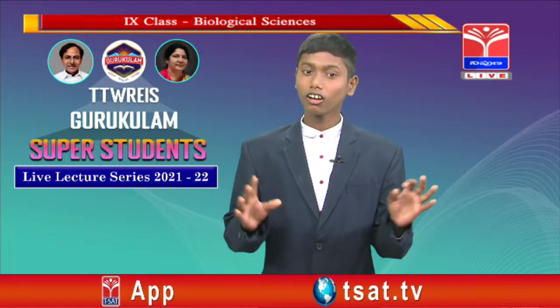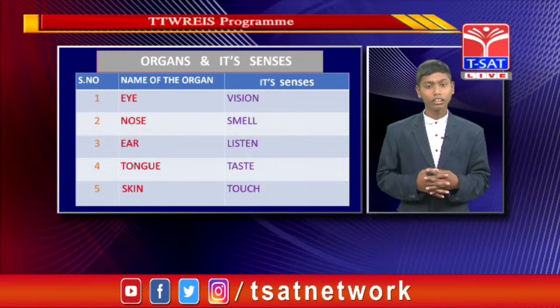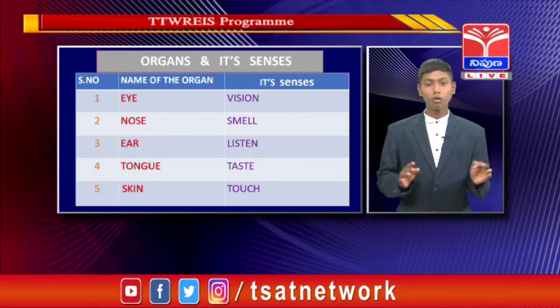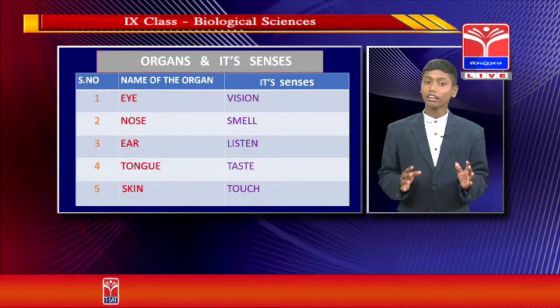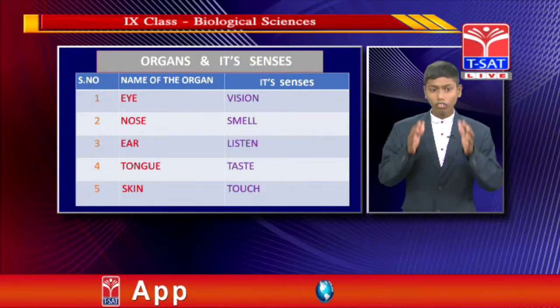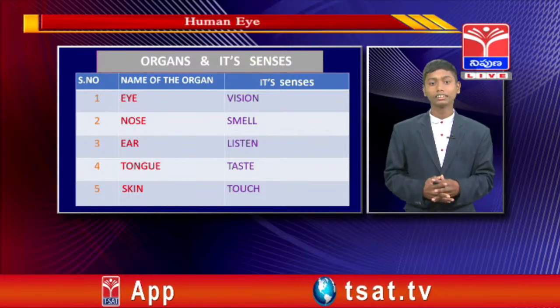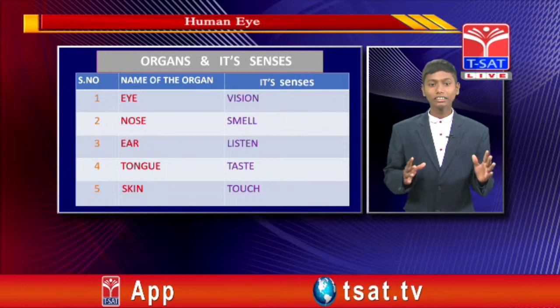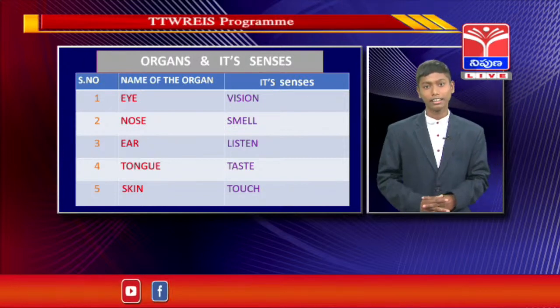Among these 5 sense organs, the eye is the first and main sense organ in our body. We will now learn briefly about the eye. Our eyeballs are embedded in the socket called the eye socket. Our eyeballs contain the eyelids, eyelashes, eyebrows, and lacrimal glands.